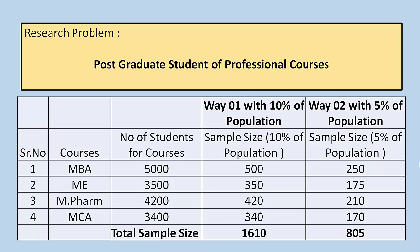The university is going to target postgraduate students. This survey is basically for PG students and professional courses. The university has considered four courses: MBA, ME, MFARM, and MCA.